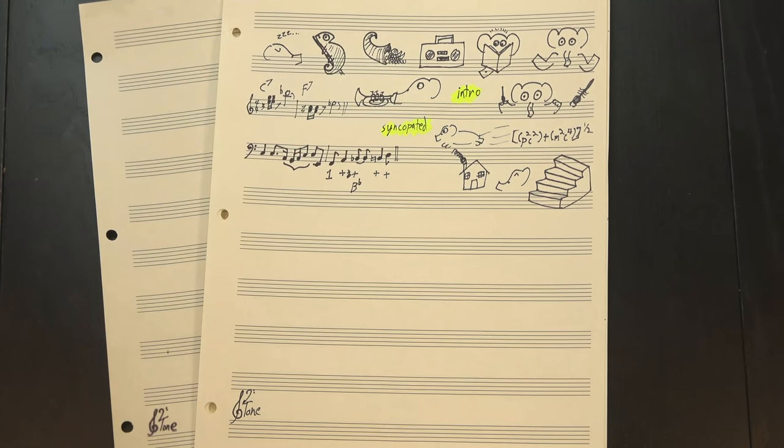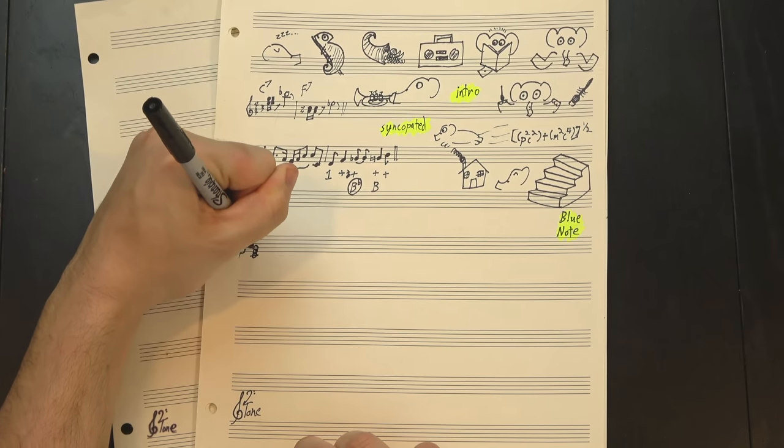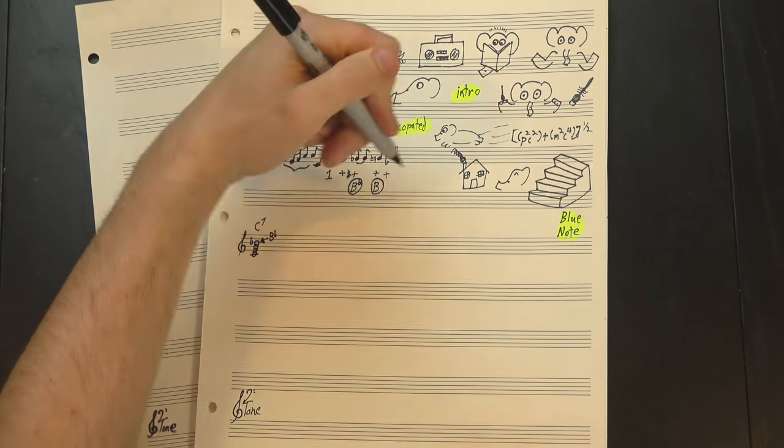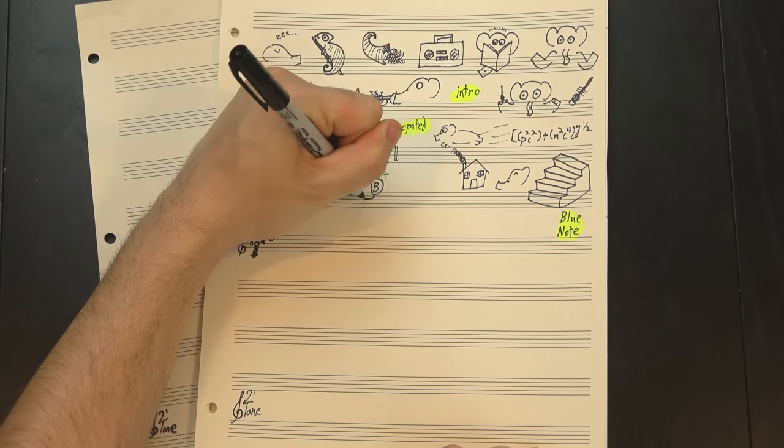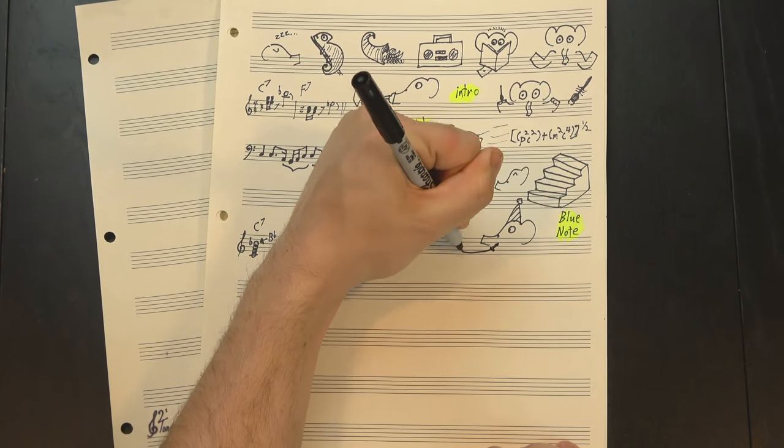The walk-up also features both Bb and B natural. The Bb is an added blue note that isn't in the key of C, but is in the C7 we've been using as our I chord. The B is in the key, but it's also a tritone above F, the root of the chord we're playing, so both these notes are dissonant and exciting in their own ways.